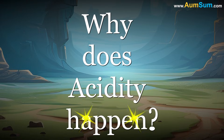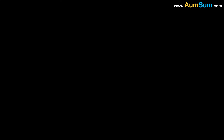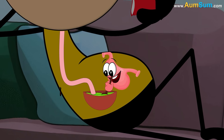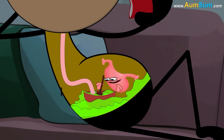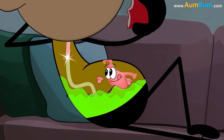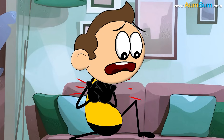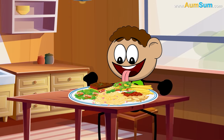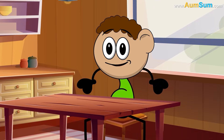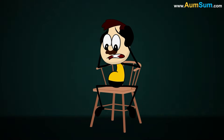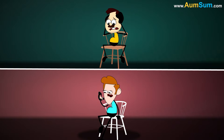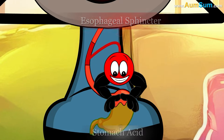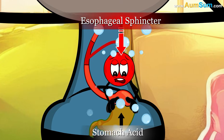Why does acidity happen? Our stomach produces hydrochloric acid to help with digestion, but if there's too much or it gets pushed up into the esophagus, it leads to discomfort like heartburn. Acidity is often caused by overeating or consuming spicy foods. Stress and certain medications can also increase acid production.